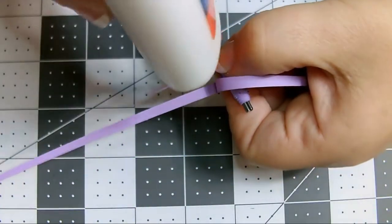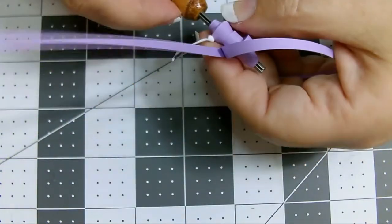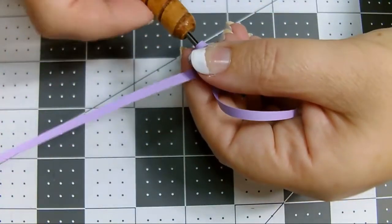When you get to the last half inch or so, put a bit of glue on it and secure the end. I got a bit too much glue here, so I'm going to wipe some off.